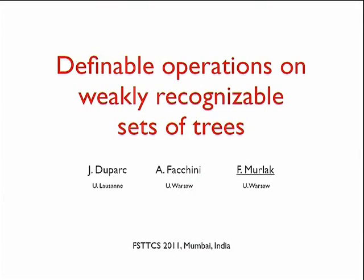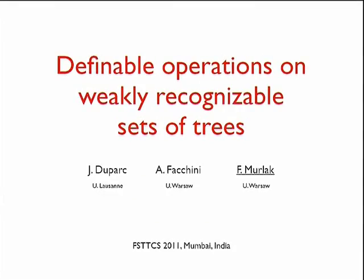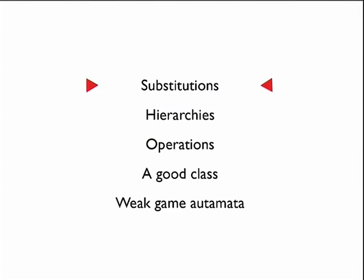I'm going to be speaking about a decidability result for a subclass of alternating automata on infinite trees. I will spend most of my time introducing the model and talking about the restrictions, intuitions, and context, and I will formulate the result in one of the last slides. This is joint work with Jacques Duparc from University of Lausanne and Alessandro Facchini, who was in Warsaw when we worked on this and is now in Amsterdam.